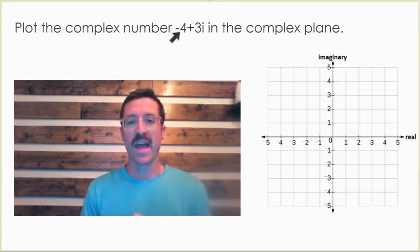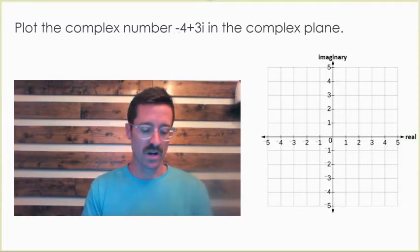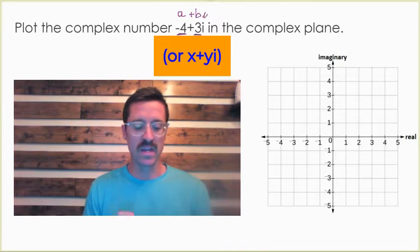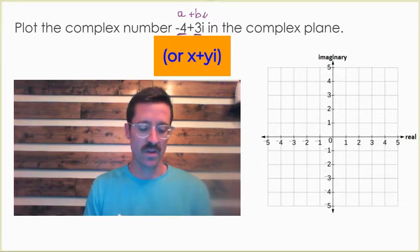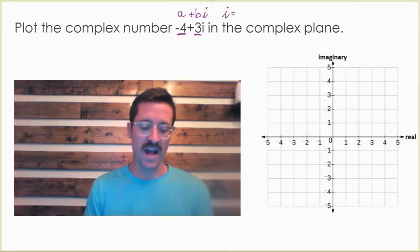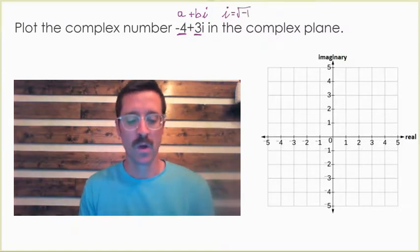When we have a complex number, we have a real part and an imaginary part. A lot of times you'll see it represented as a + bi, where a is the real value and b is the imaginary value. And then your i, you might remember from previously that i represents the square root of negative one.